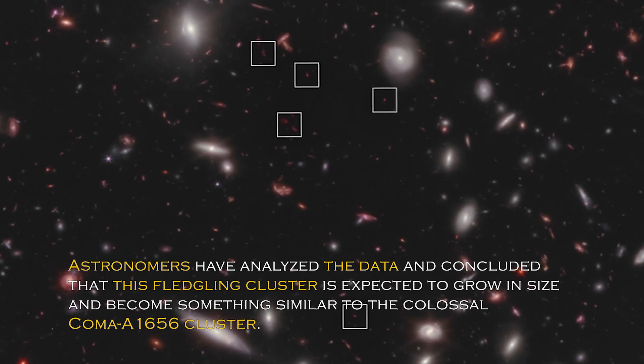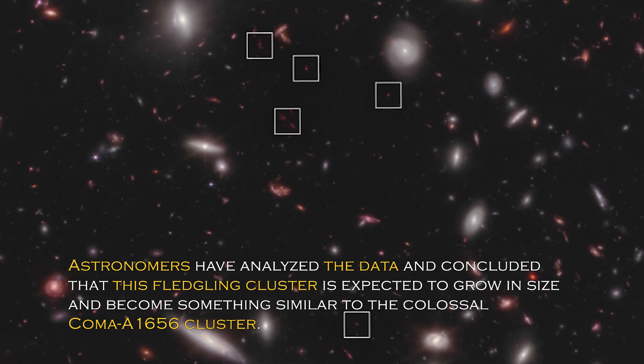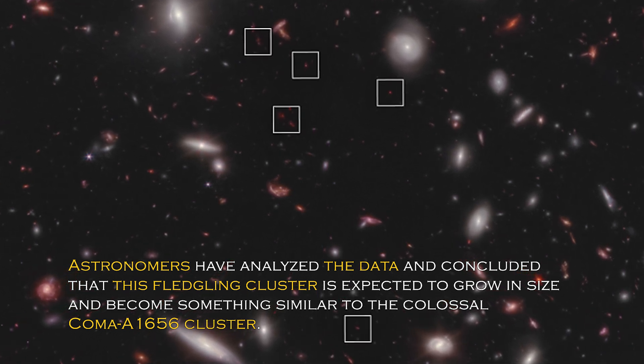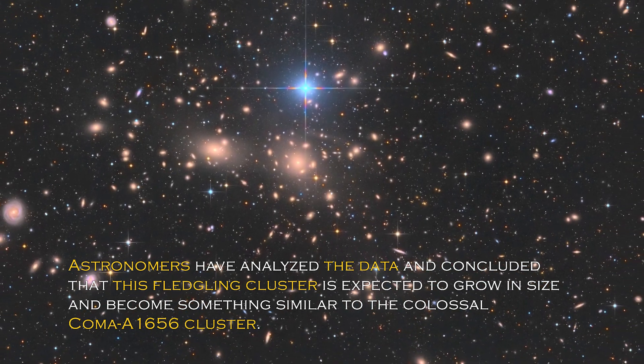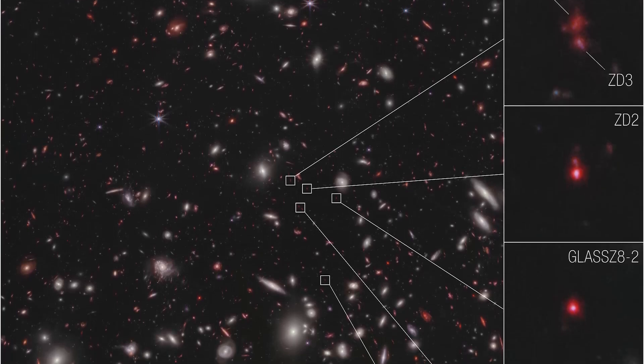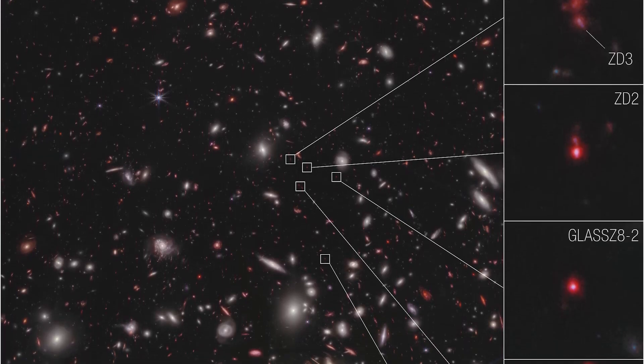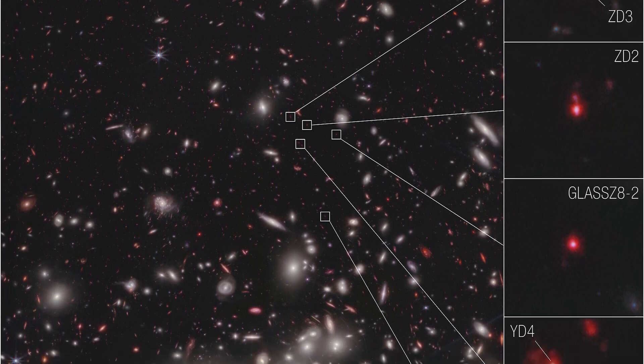Astronomers have analyzed the data and concluded that this fledgling cluster is expected to grow in size and become something similar to the colossal Coma Cluster A1656. The place where all this is taking place is unique and special, as it is in an area of accelerating galactic evolution thanks to the James Webb Space Telescope.